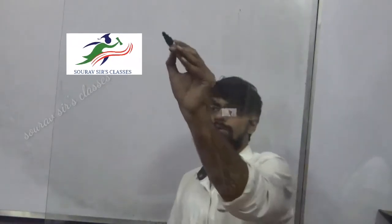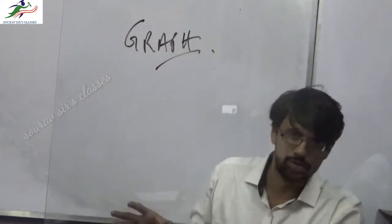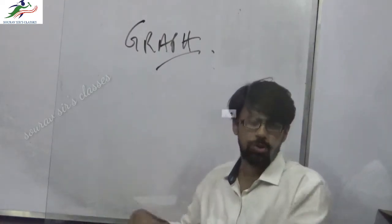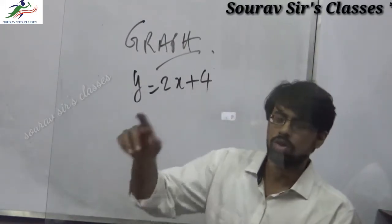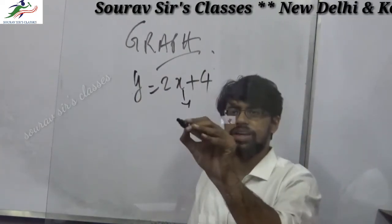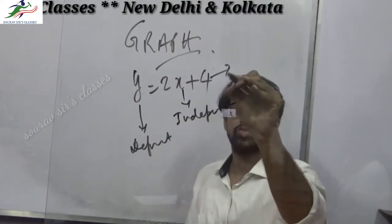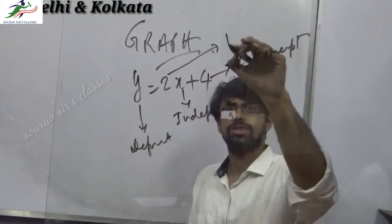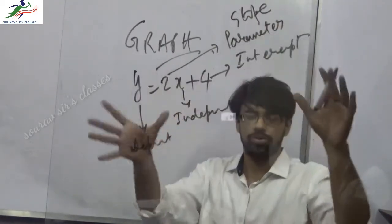This video is focused on graphs, so I will cover many types of graphs today and the basic criteria on how to do those kinds of graphs just from a given equation. Let's start with a very basic equation: y equals 2x plus 4. Here, x is the independent variable, y is the dependent variable, the 4 is the intercept, and the 2 is the parameter or slope.